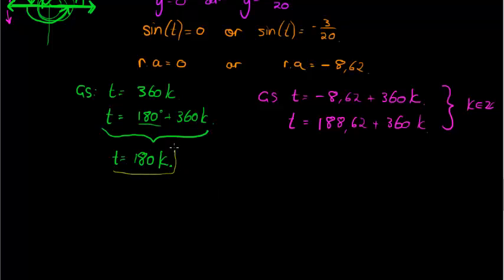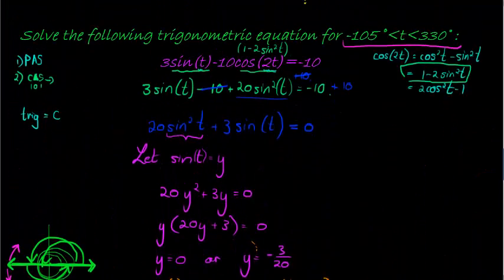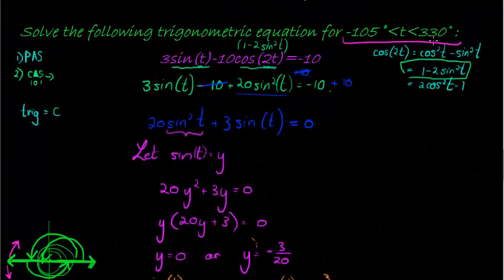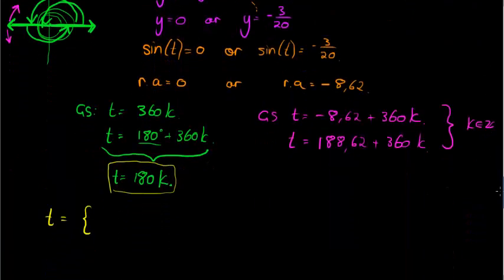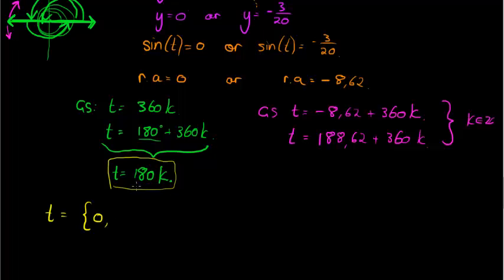So I'm just going to use this one, since it's a summary, but you can use both if you didn't make this conclusion. So t is equal to, let's try k equal to 0. If k is equal to 0, then t is equal to 0 because 180 times 0 is 0. So 0 does fall, is bigger than negative 105, smaller than 330, so 0 is one of the solutions.